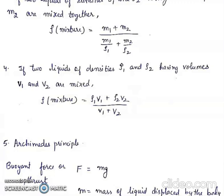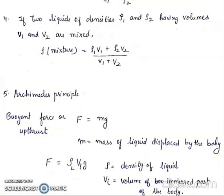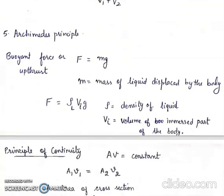Next is Archimedes principle. Buoyant force or upthrust is equal to mg. M is the mass of liquid displaced by the body. Whenever a body is immersed partially or fully in a liquid, then it loses some of its weight. This is Archimedes principle.